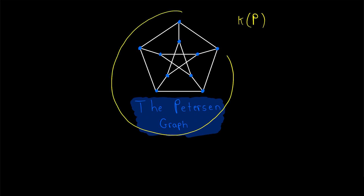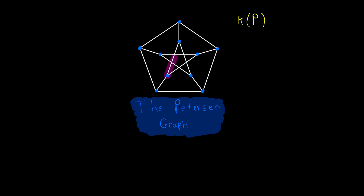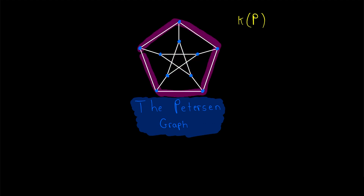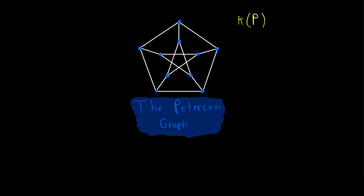The Petersen graph is a very well-known graph for a number of reasons. It has a pretty nice structure: it consists of an internal 5-cycle, often drawn as a star, and an outer 5-cycle, often drawn as a pentagon. Each vertex of the outer cycle is joined to a vertex of the inner cycle. So what is the vertex connectivity of this neat graph?